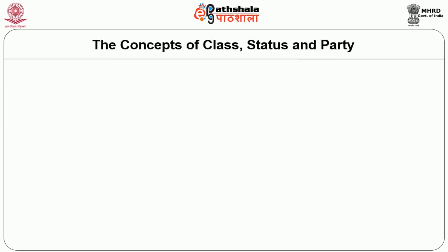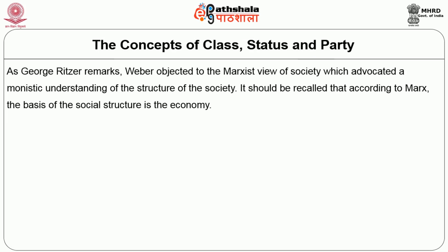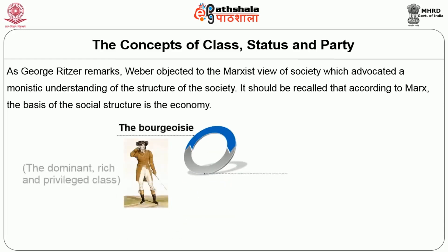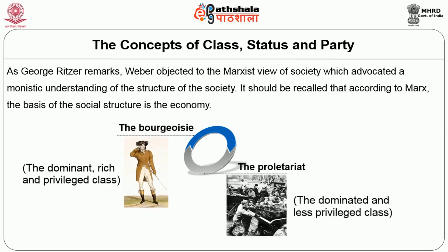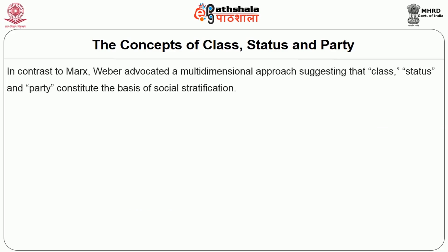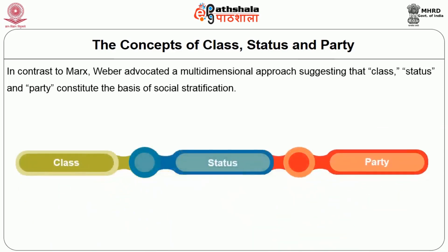The concept of class, status and party. As George Ritzer remarks, Weber objected to the Marxist view of society, which advocated a monistic understanding of the structure of society. According to Marx, the basis of the social structure is the economy, and it is on the grounds of economy that society was divided into two classes: the bourgeoisie — the dominant, rich and privileged class — and the proletariat — the dominated and less privileged class. In contrast to Marx, Weber advocated a multidimensional approach, suggesting that class, status and party constitute the basis of social stratification. Therefore, for Weber, society can be analyzed in terms of class, status and party.